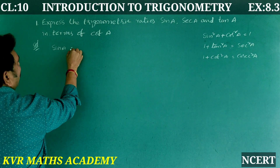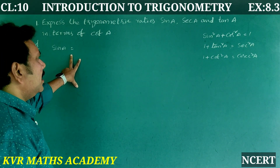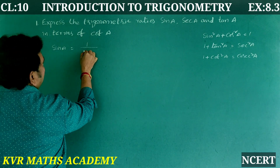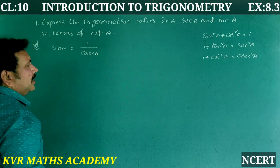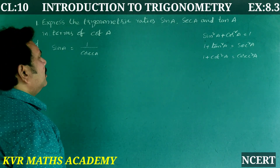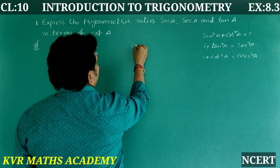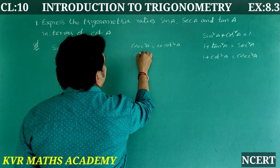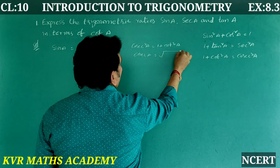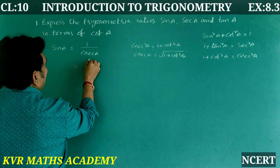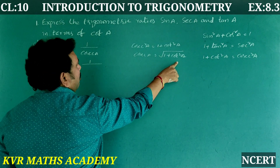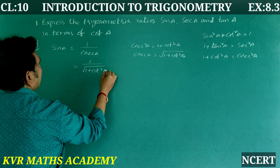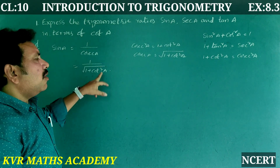First, let's express sin A in terms of cot A. sin A is the reciprocal of cosec A, so sin A = 1/cosec A. Now, from the identity, cosec²A = 1 + cot²A, so cosec A = √(1 + cot²A). Therefore, sin A = 1/√(1 + cot²A).